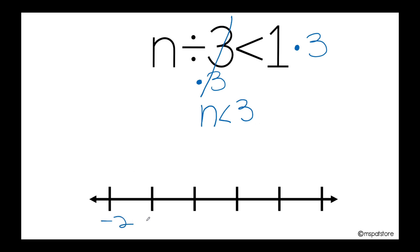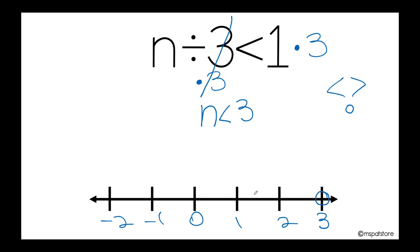So now I have negative 2, negative 1, 0, 1, 2, and 3. Remember that when I have less than or greater than, I'm going to use an open circle. So now I need to make an open circle right here at positive 3. Basically, my solution is telling me that n could be any number less than 3. Any number less than 3 is 2, 1, 0, negative 1, and so on. So my arrow will be pointing towards this direction, because those numbers are less than positive 3.